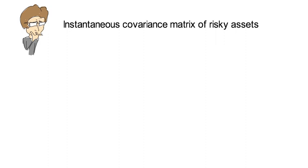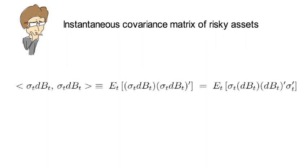It's angle bracket sigma_t dB_t, sigma_t dB_t angle bracket. That is just equivalent or defined to be the conditional expectation as of time t of sigma_t dB_t times the transpose of sigma_t dB_t.